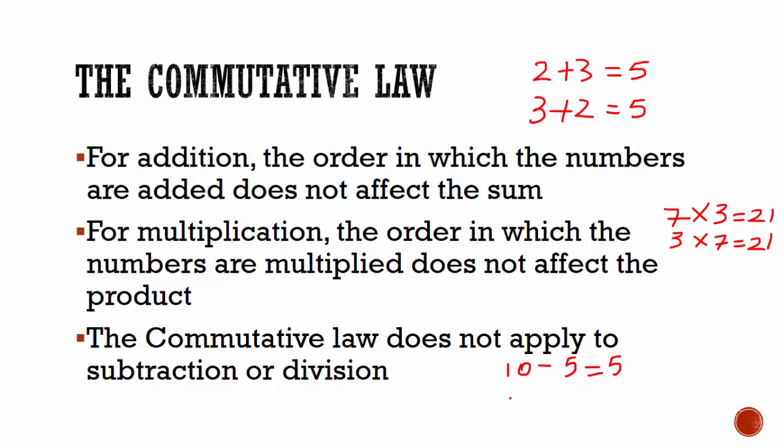But 5 take away 10 will give you minus 5. For division, 8 divided by 2 is equal to 4, and 2 divided by 8 is equal to 2 eighths or in reduced form, 1 quarter.